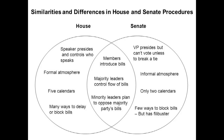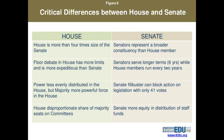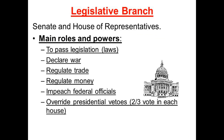Both Houses must approve a bill before it gets sent to the President to become law. Both Houses also need a two-thirds majority vote to override a veto of a bill by the President. They can also approve the declaration of war, so both Houses must approve the declaration of war.